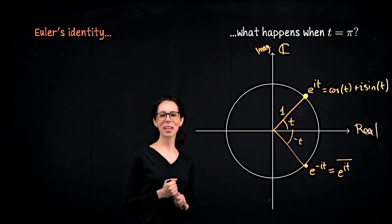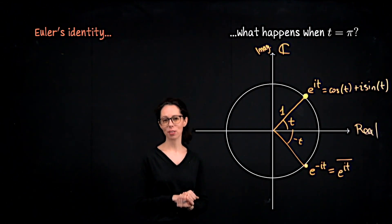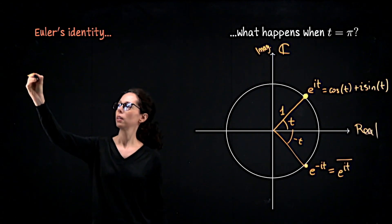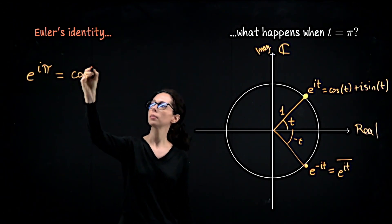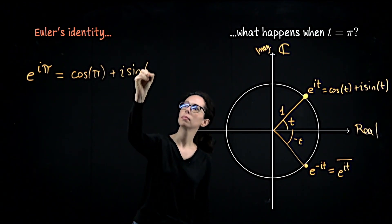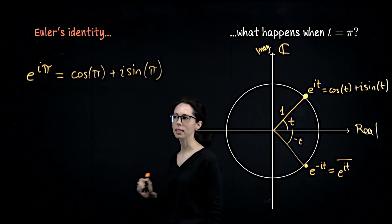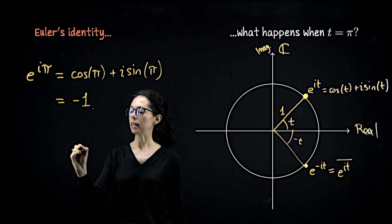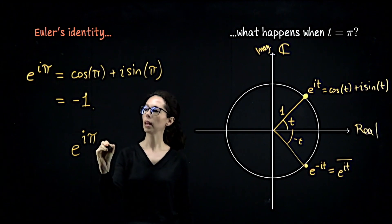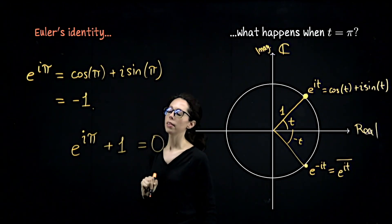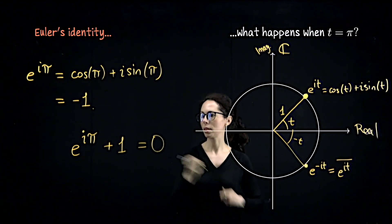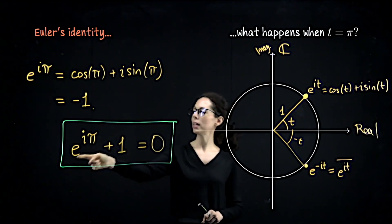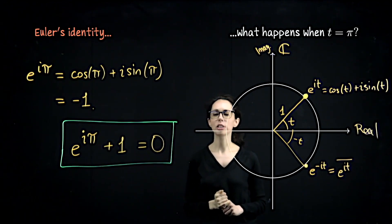From Euler's formula we get a famous identity called Euler's identity, which is what the equation reduces to when we plug in t equals pi. Algebraically, e to the i pi equals cosine of pi plus i sine of pi. Sine of pi is zero and cosine of pi is negative one, so the right-hand side is negative one. People often write Euler's identity by bringing the one to the left side: e to the i pi plus 1 equals 0. This form is celebrated because it links five famous numbers in mathematics: e, i, pi, 1, and 0.